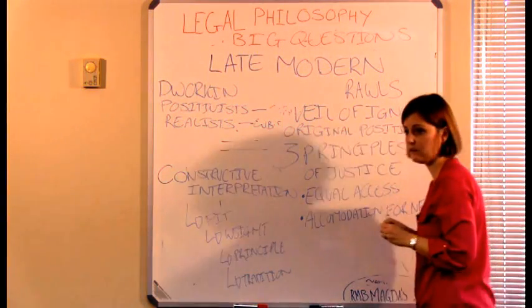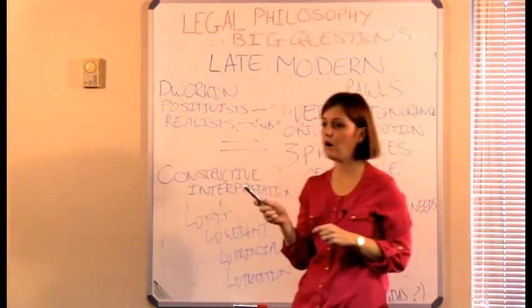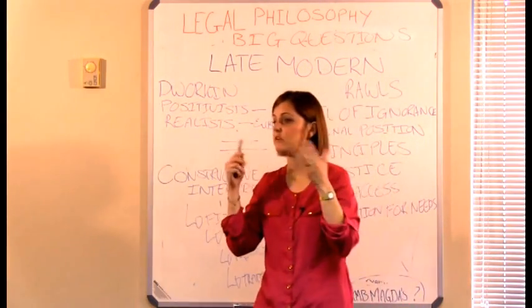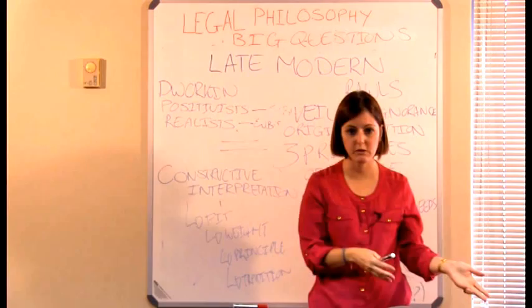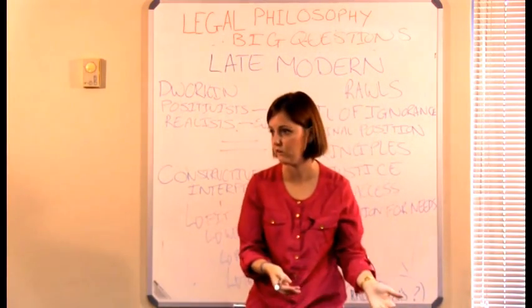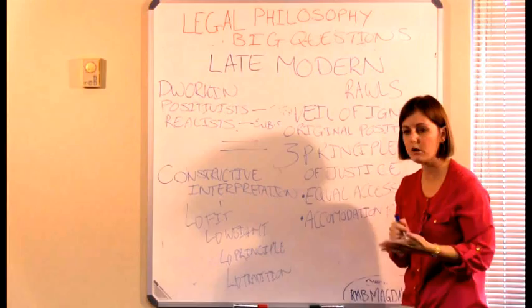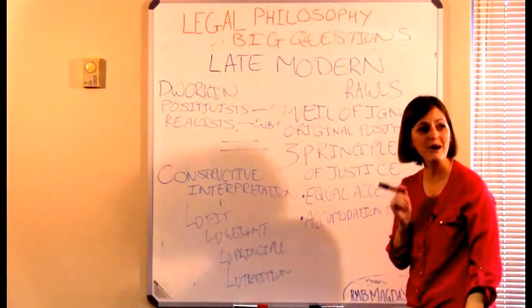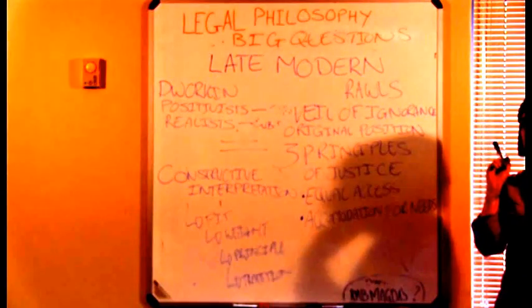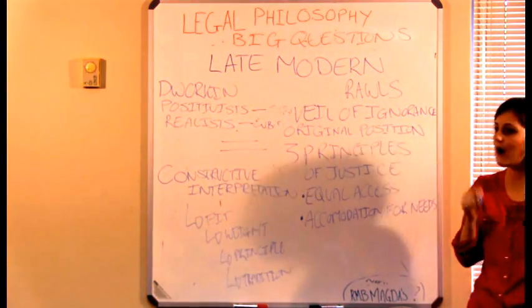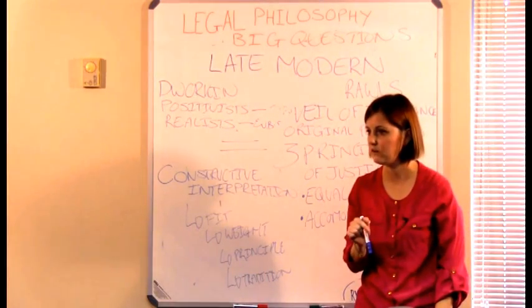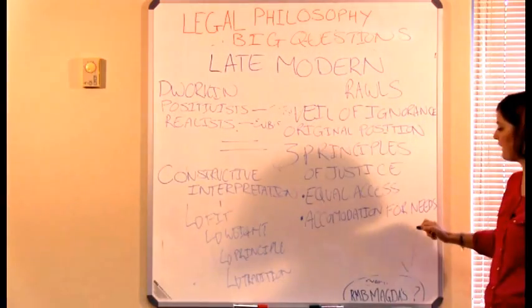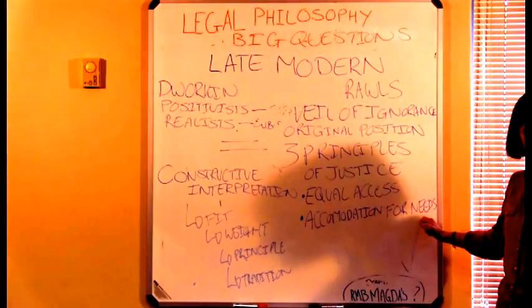But we make accommodation for special needs. Because when the veil is lifted, you don't know whether you're going to be poor or rich, disabled or not disabled, whether you're going to get a job or be unemployed. You don't know that. And you want to make sure that if you happen to be poor, you have greater access to resources than someone who happens to be rich. If you happen to be a quadriplegic, you are going to be taken care of. So we would decide on that just in case it happens to be us.